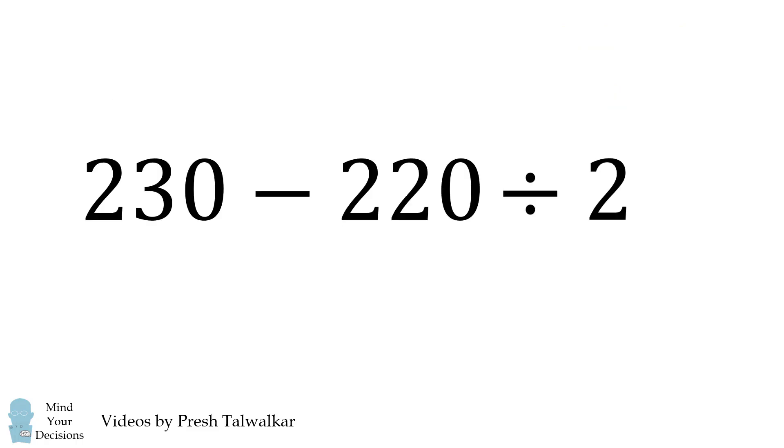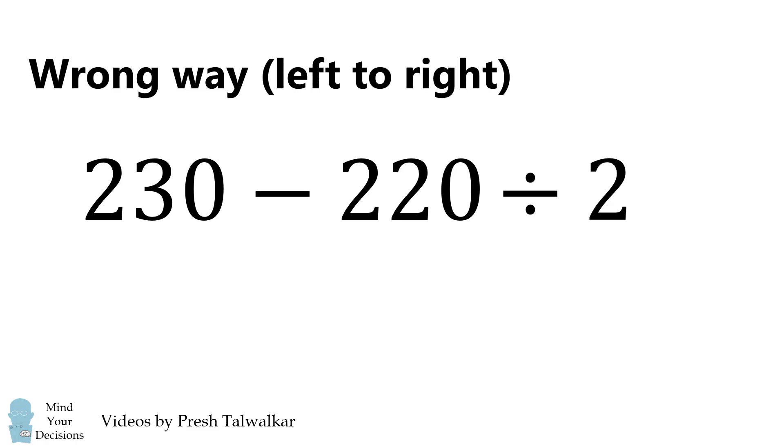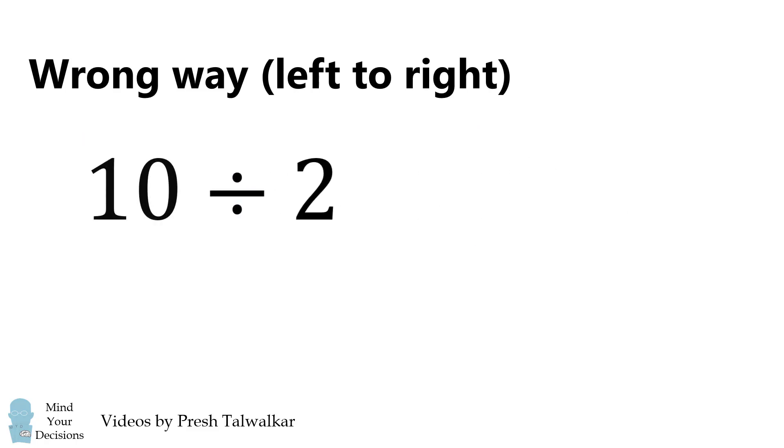Now you could evaluate it from left to right, but that would be the wrong way. Some people might do 230 minus 220. This would simplify to be 10 and then 10 divided by 2 is equal to 5. But this is definitely the wrong answer.